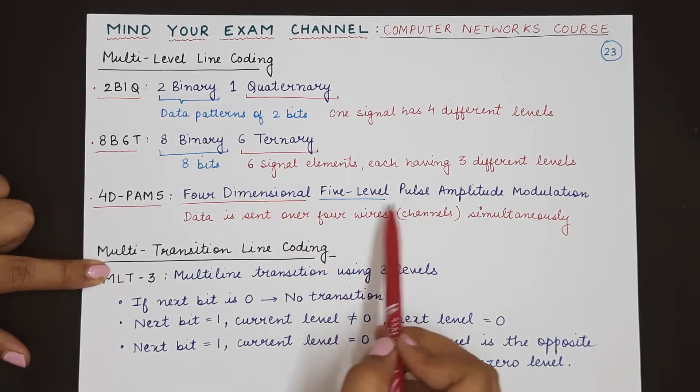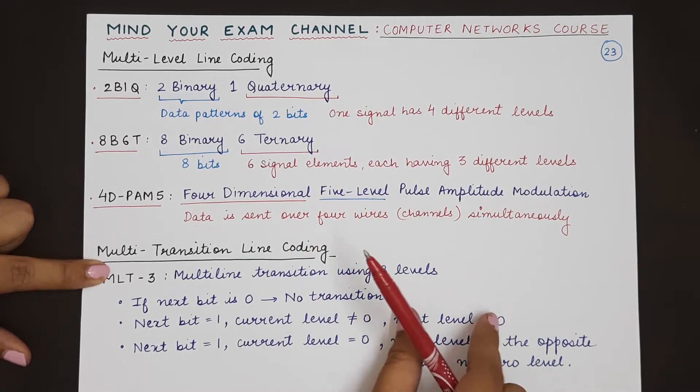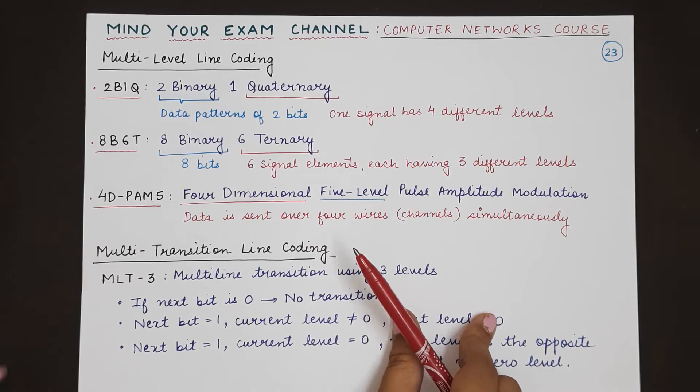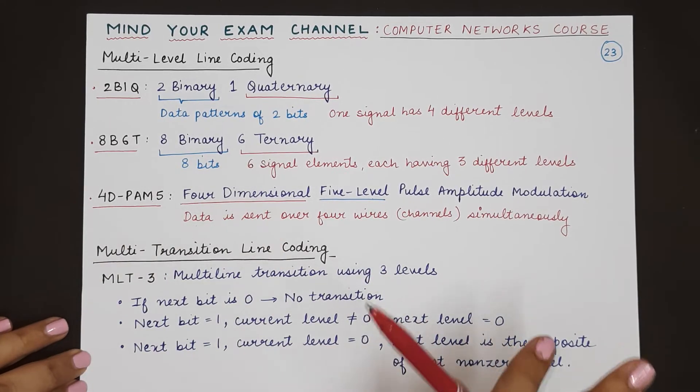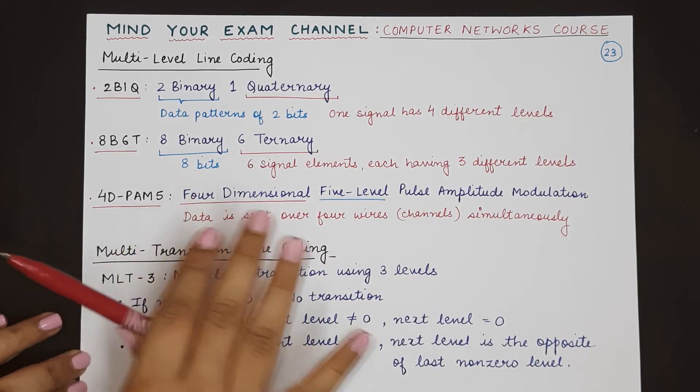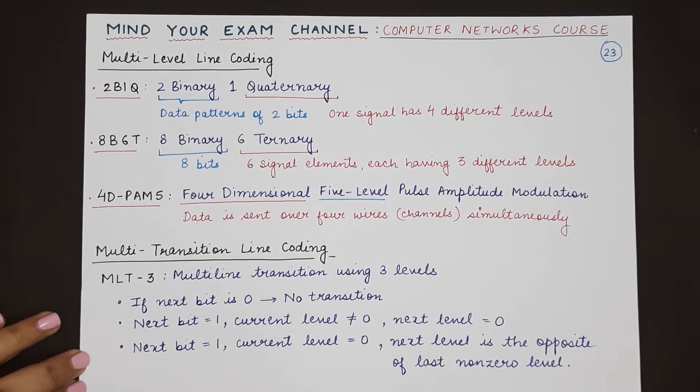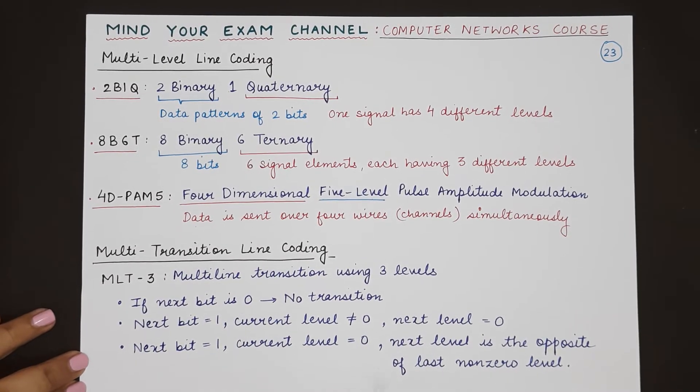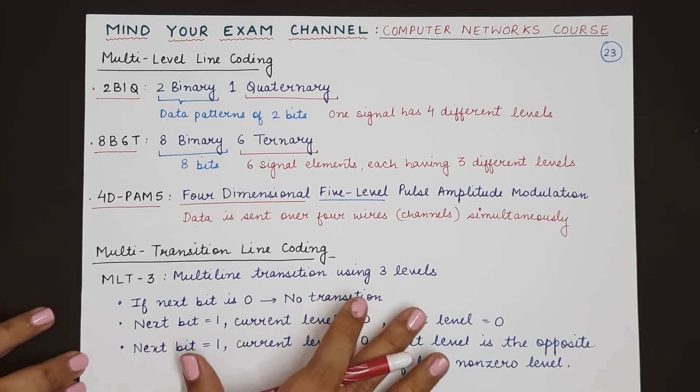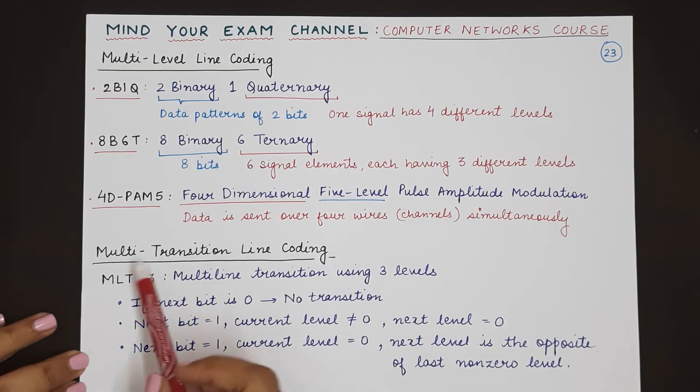The data will be using 5 different levels to represent the bits. This is enough that you have to know about the line coding schemes. Representation might not be asked in your paper mostly in these cases. So let's come to the multi-transition line coding scheme.